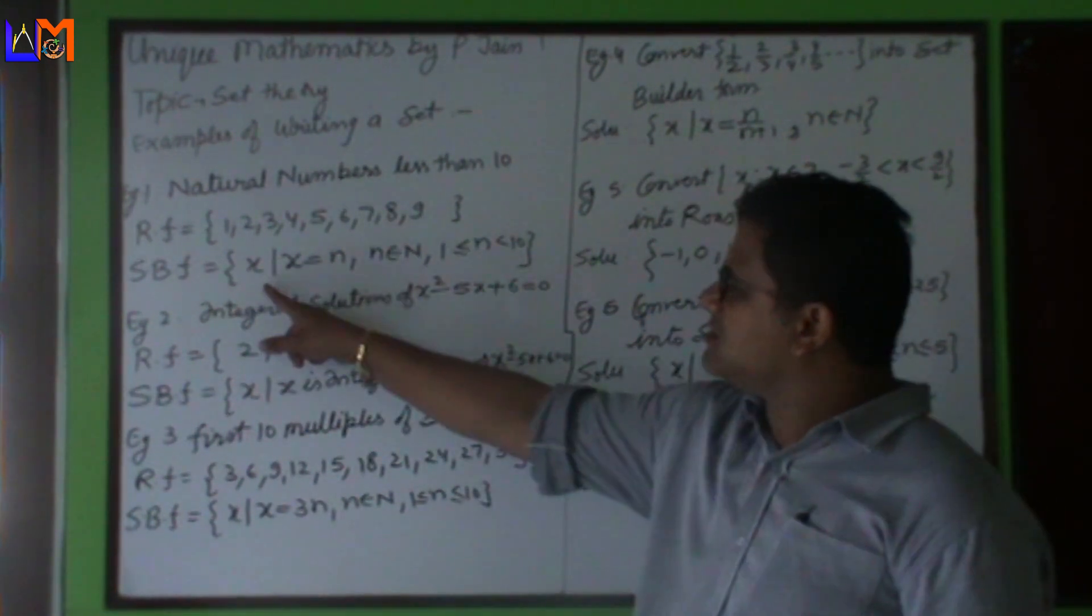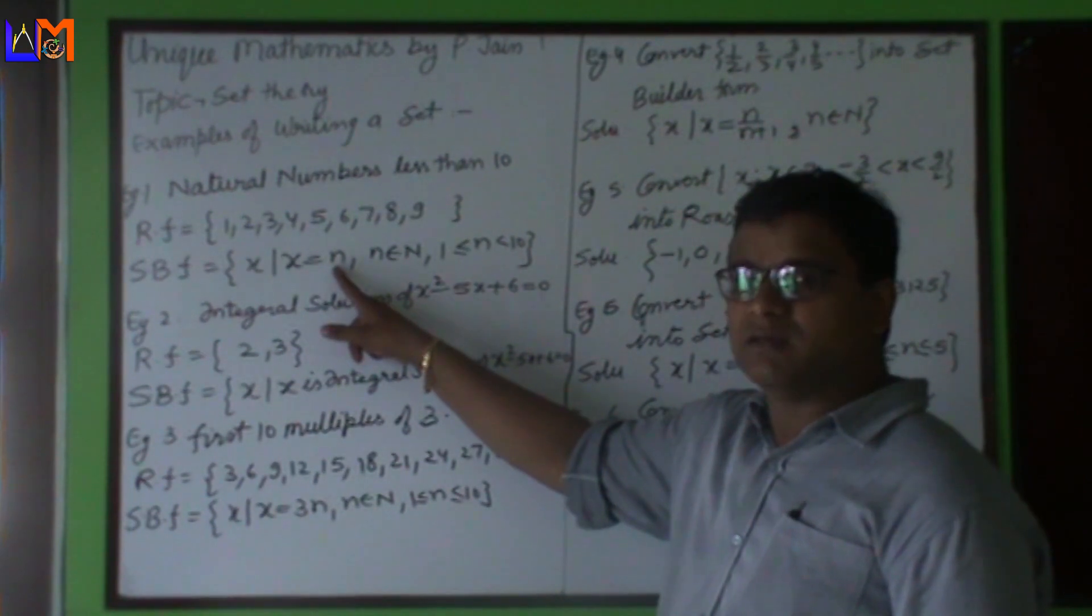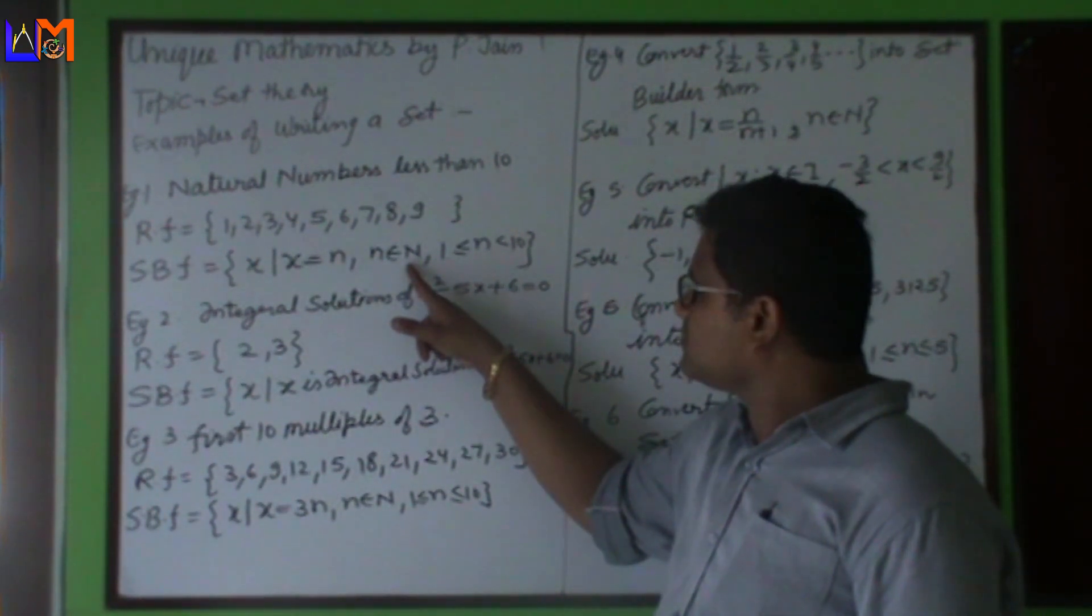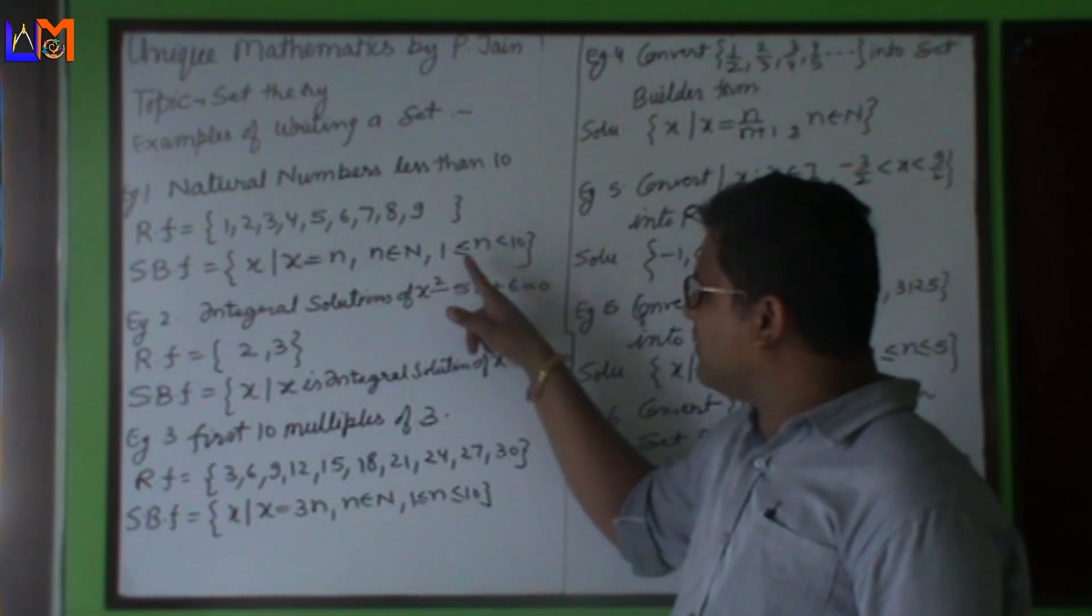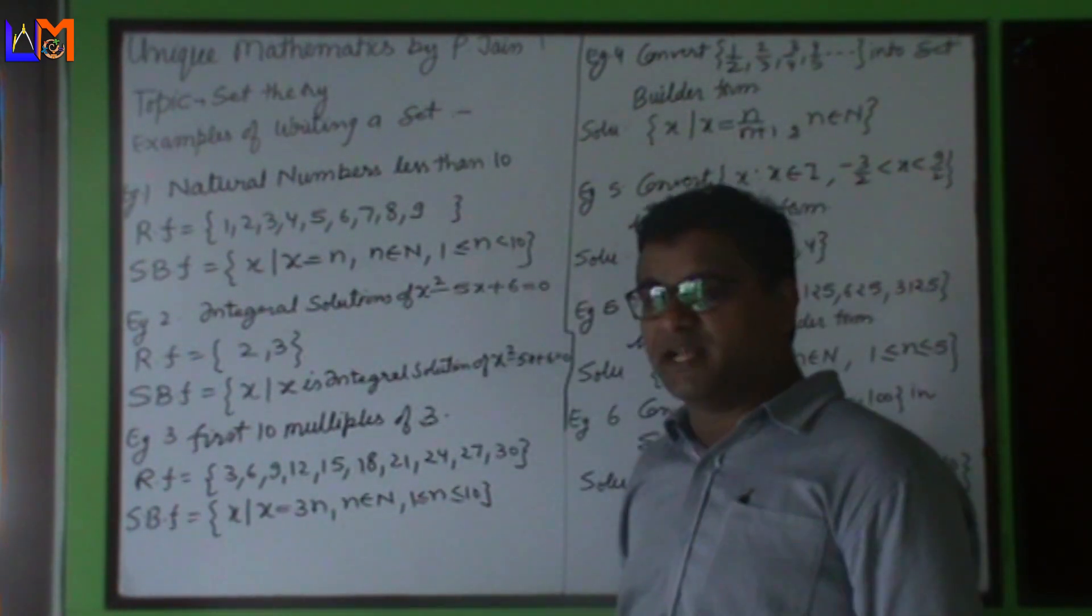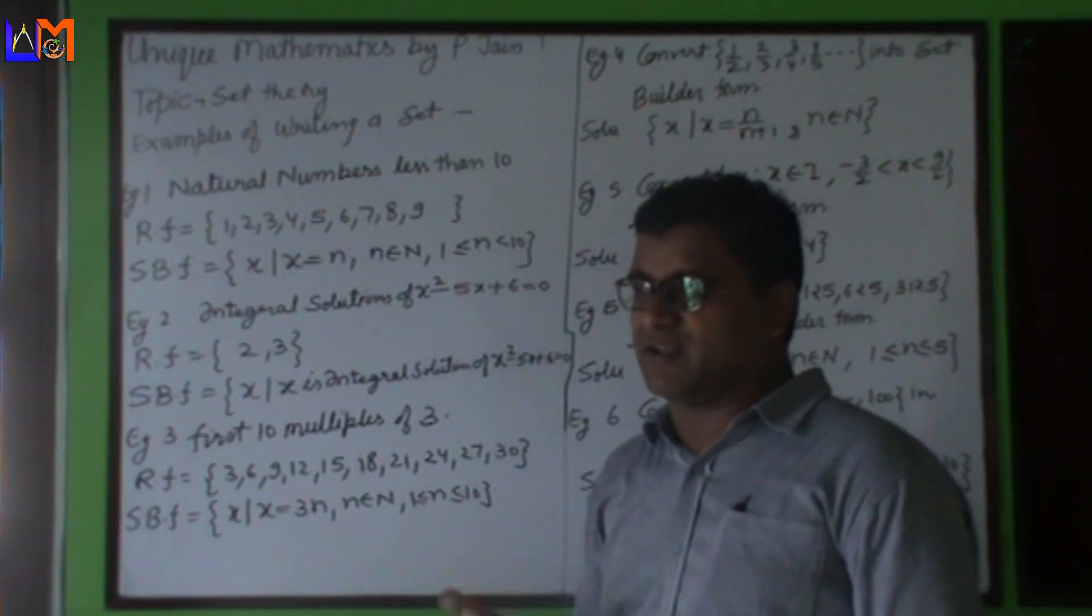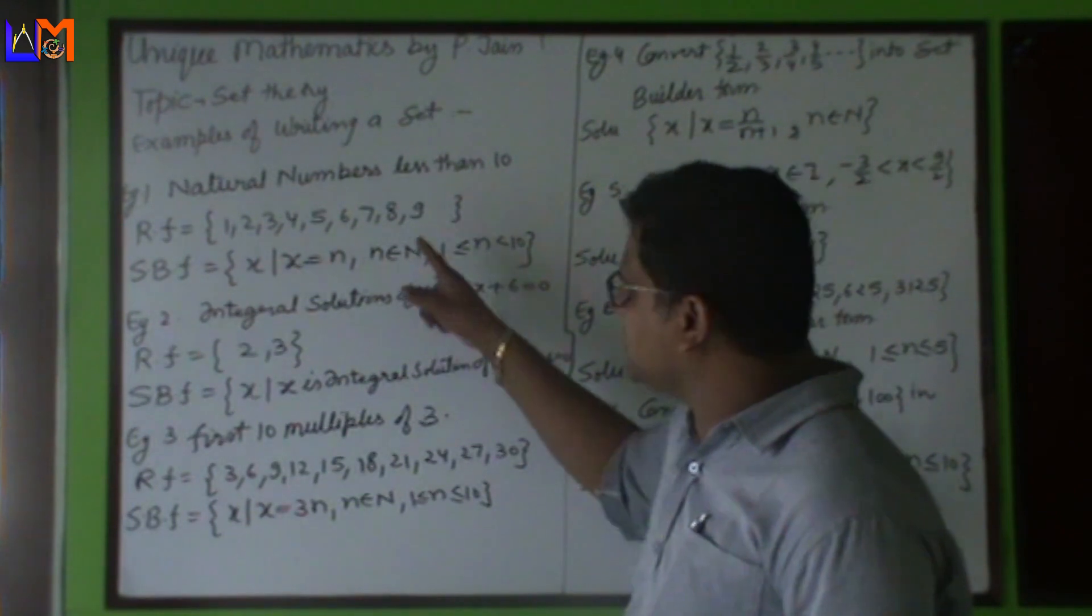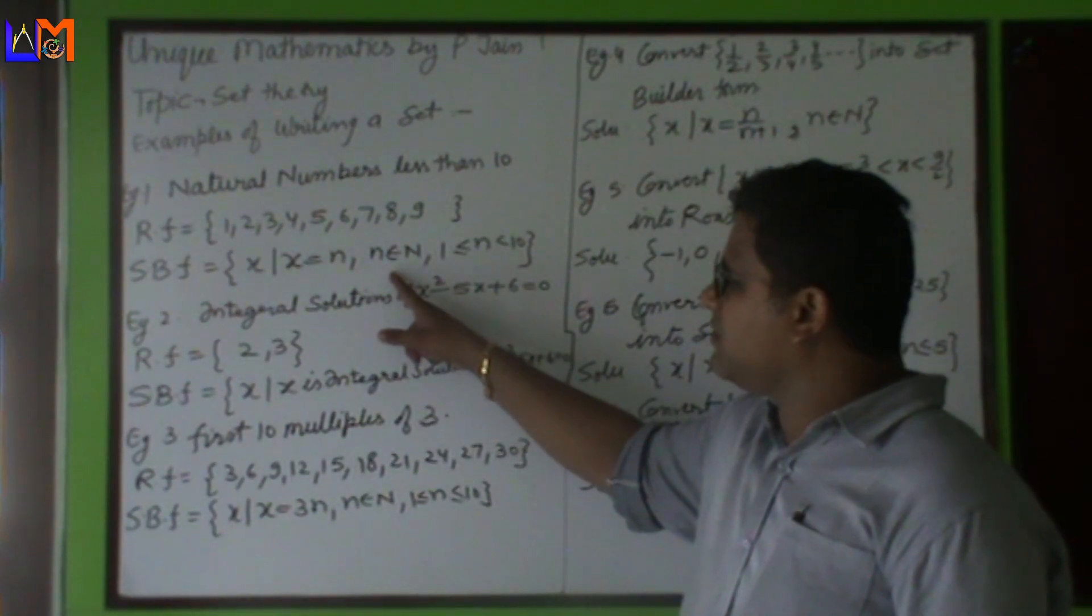Similarly, in set builder form we can write it: x such that x equals n, small n is a natural number, and the small n lies between 1 and 10, where 1 is included but 10 is not included because they have asked us natural numbers less than 10. So these are the two forms: first is roster form and the second one is set builder form.